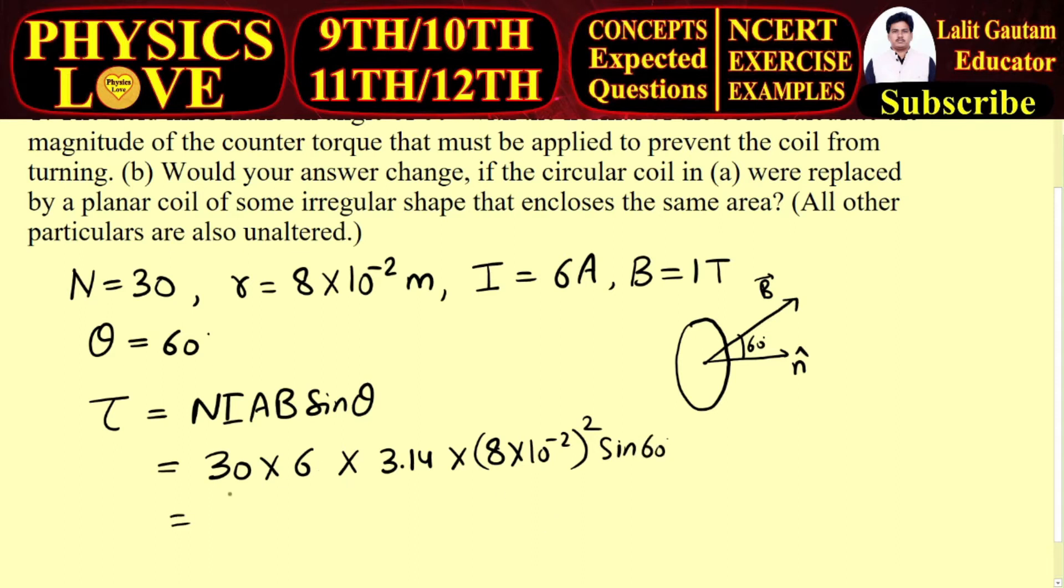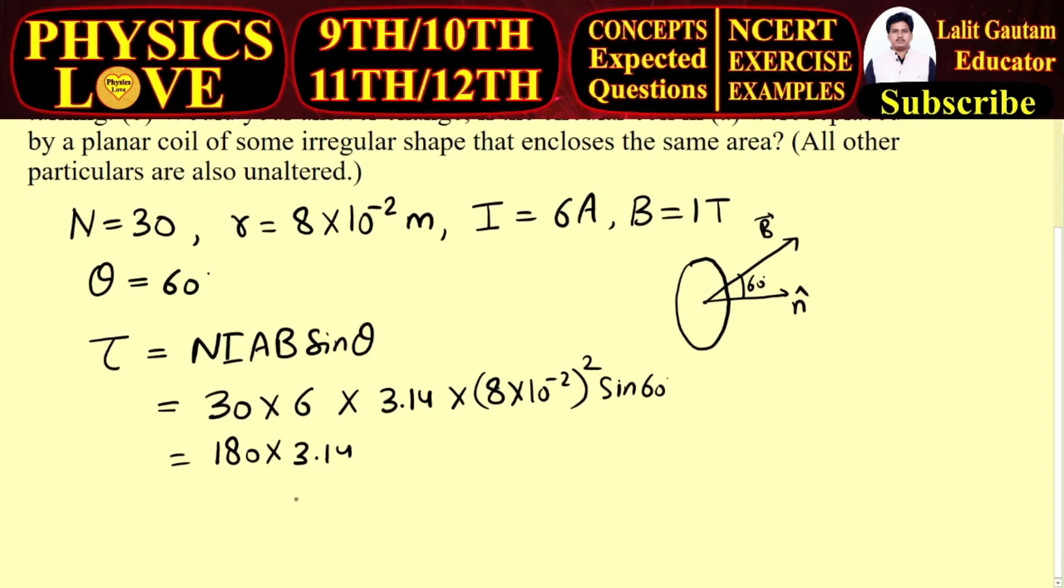Now 6 times 3 is 18, so it is 180 multiplied by 3.14 into 8, which is 64 into 10^-4, and sin 60 is √3/2.